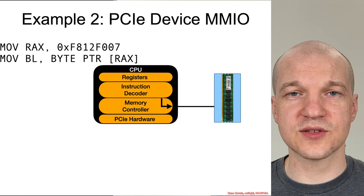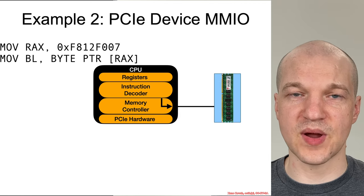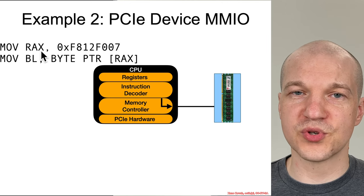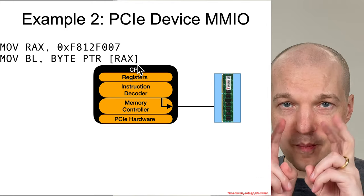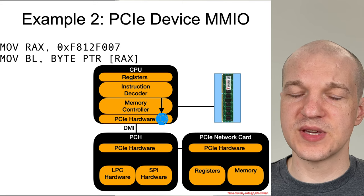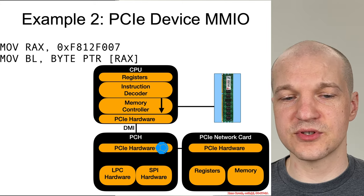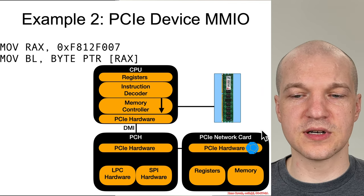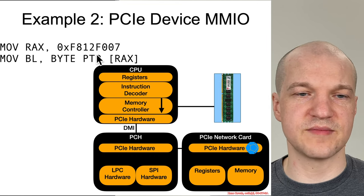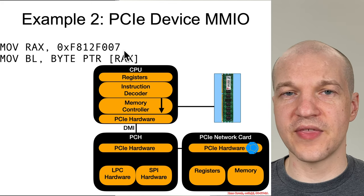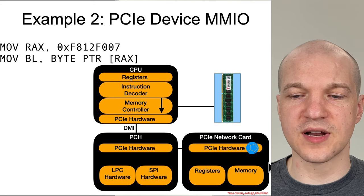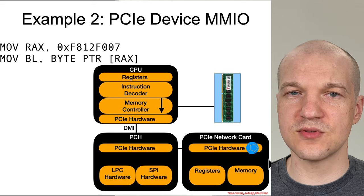Now let's consider the case where the address corresponds to a PCIe device, and therefore it's memory-mapped I/O. Let's say this address corresponds to a gigabit ethernet card. That address is put into a register and the assembly reads from memory, but that memory access is actually going to be routed down to the PCIe device. The bouncing ball goes down to the PCIe hardware, across a DMI link down to the PCH. The PCH sends it over to the PCIe network card, and then the card says it was accessing offset F007 within some particular range assigned to it. That hardware decides that offset corresponds to some registers, some memory, or perhaps some non-volatile memory attached to the PCIe network card — whatever it corresponds to, that's up to the chunk of hardware to decide.